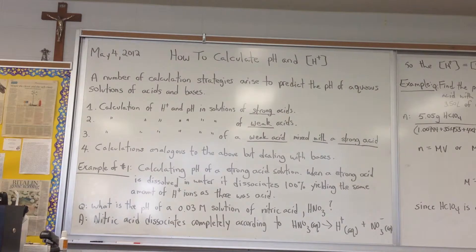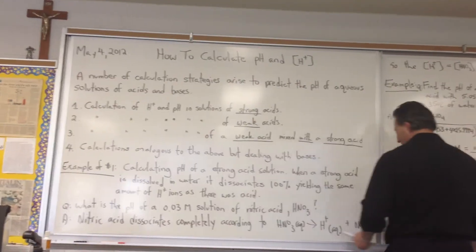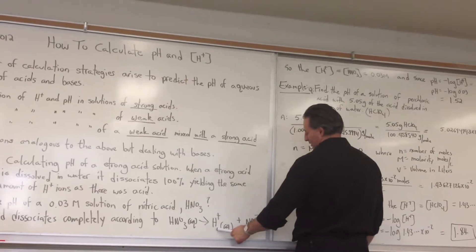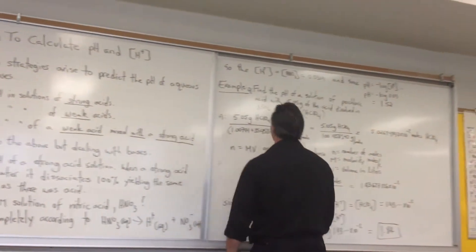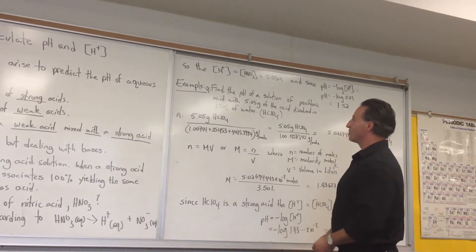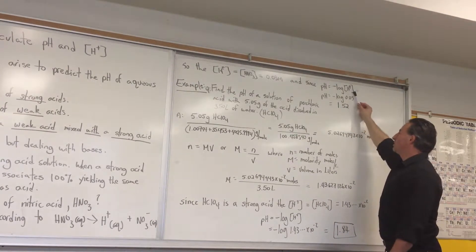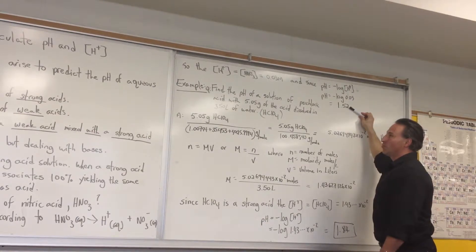For example, what is the pH of a 0.03 molar solution of nitric acid? Nitric acid dissociates completely to give you the protons and nitrate anion. Therefore, the H+ concentration is going to also equal 0.03 molar. Plug that into the pH equation: pH equals negative log of H+ concentration. You get a pH of 1.52.